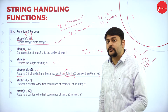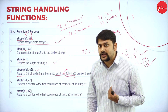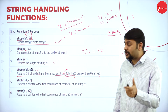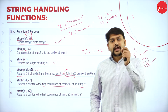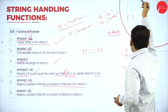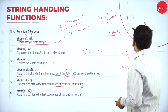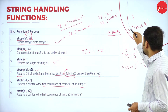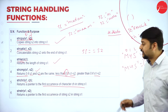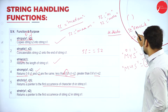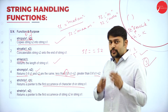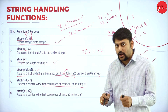The next function is strchr. It takes two parameters: a string s1 and a character ch. It returns a pointer to the first occurrence of that character in the string. For example, if s1 is 'kaushik' and ch is 'k', it will point to where 'k' first occurs in the string.